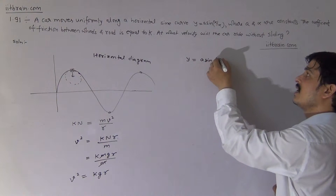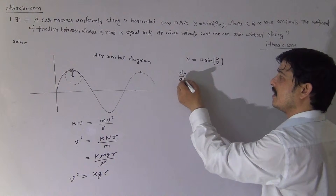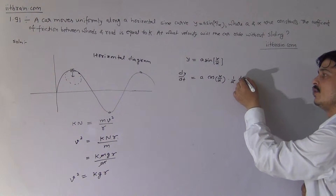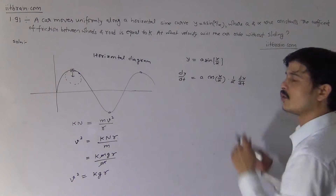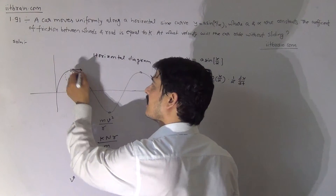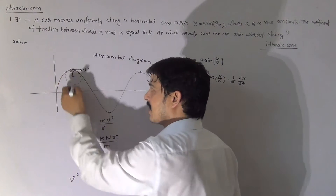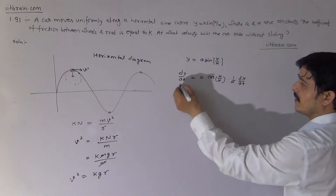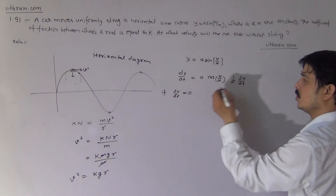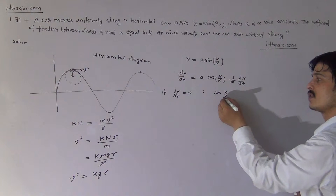The curve is y = a·sin(x/α). Differentiating this with respect to time, dy/dt = (a/α)·cos(x/α)·(dx/dt). At the critical point, the car is traveling along the x-axis, meaning the y-component of velocity is zero. So if we set dy/dt = 0, for this to equal zero, it is necessary that cos(x/α) = 0.